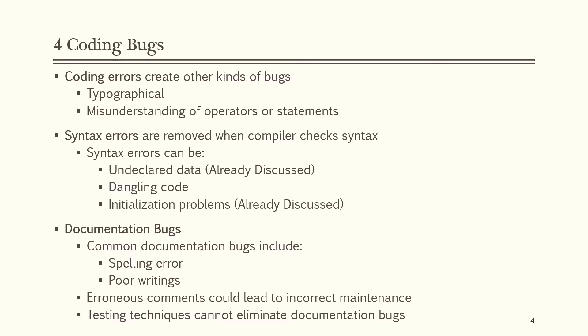Documentation bugs include common issues such as spelling errors and poor writing. Erroneous comments could lead to incorrect maintenance. Testing techniques cannot eliminate documentation bugs — they can only be identified and removed through inspections and walkthrough techniques.